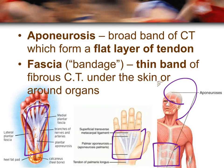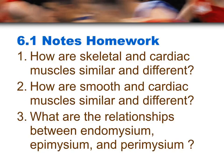The aponeurosis connects the muscles of the forehead to the ones at the back of the head. The 6.1 notes homework is: number one, how are skeletal and cardiac muscles similar and different? Number two, how are smooth and cardiac muscles similar and different? Number three, what is the relationship between endomysium, epimysium, and perimysium?